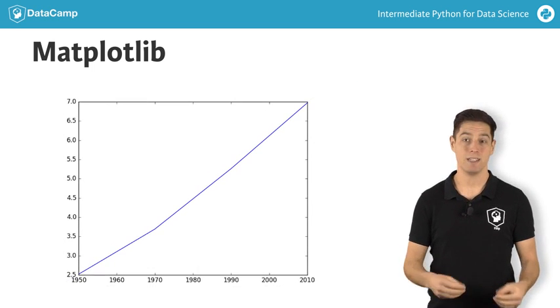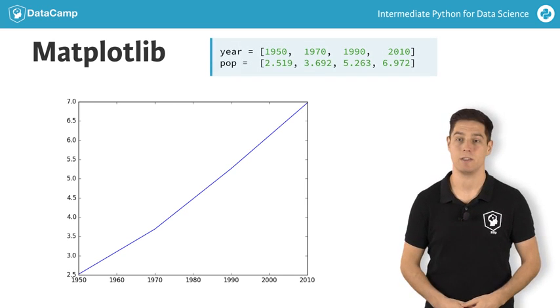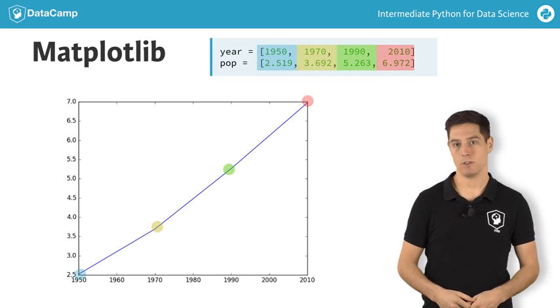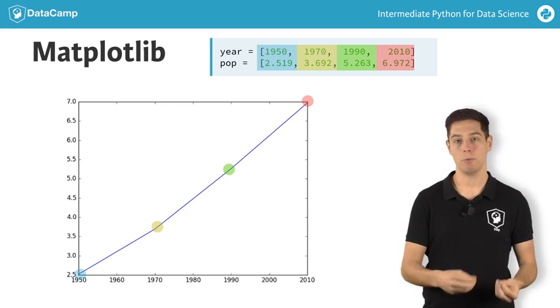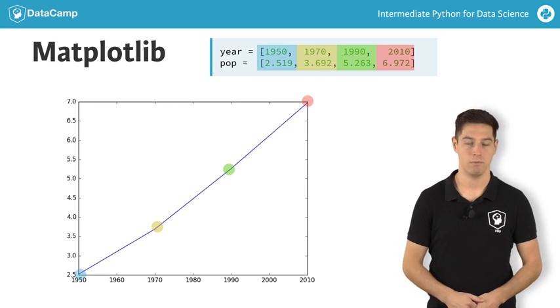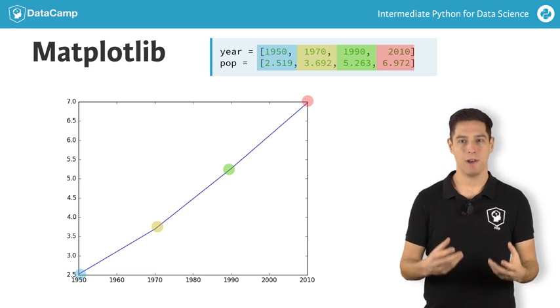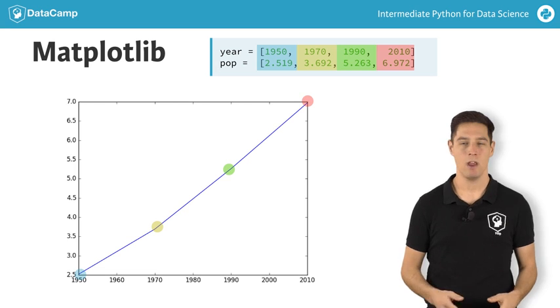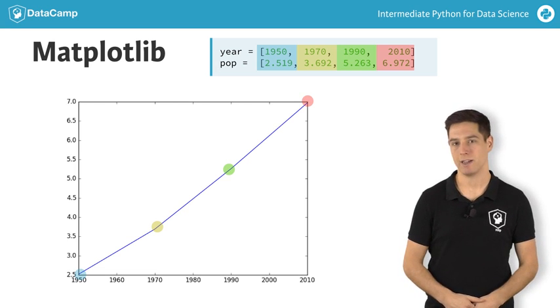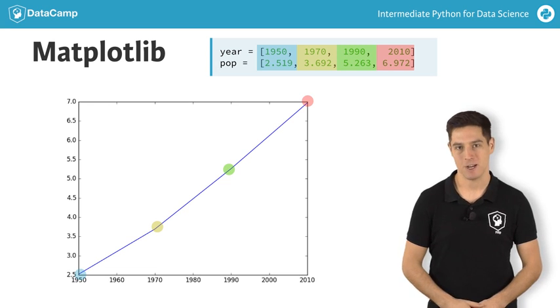When we look at our plot, we see that the years are indeed shown on a horizontal axis, and the population on a vertical axis. There are four data points, and Python draws a line between them. In 1950, the world population was around 2.5 billion. In 2010, it was 7 billion. So the world population has almost tripled in 60 years. That's pretty scary. What if the population keeps on growing like that? Will the world become overpopulated? You'll find out in the exercises.